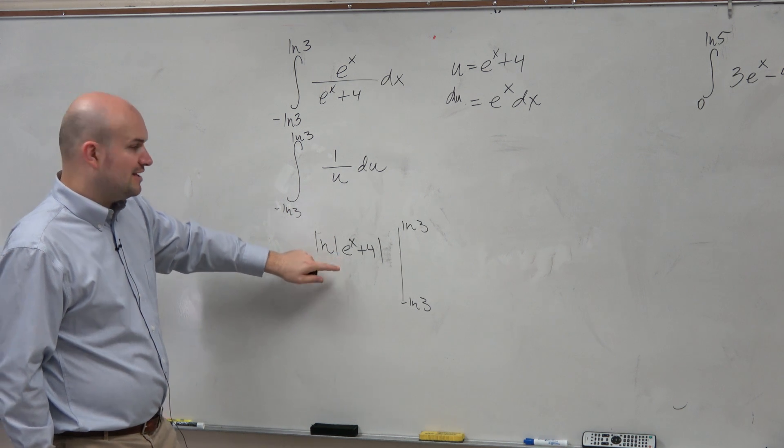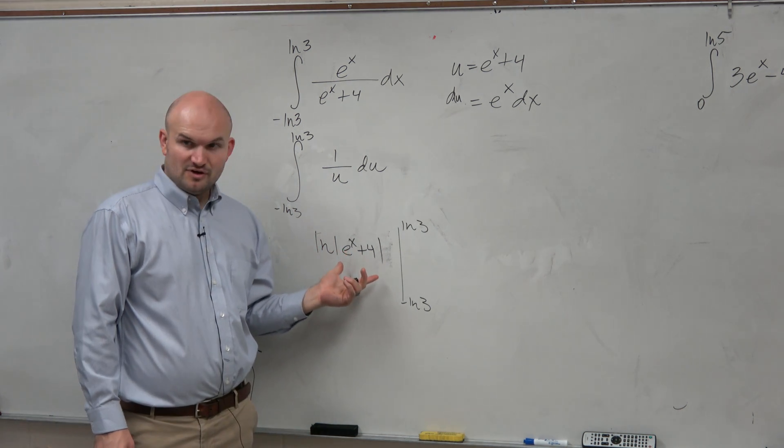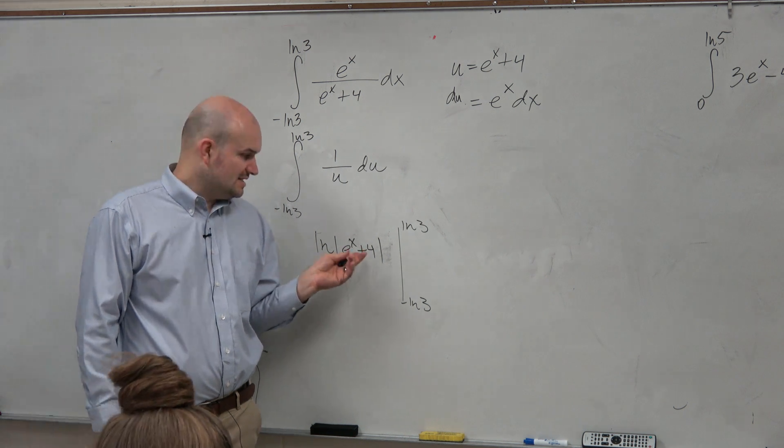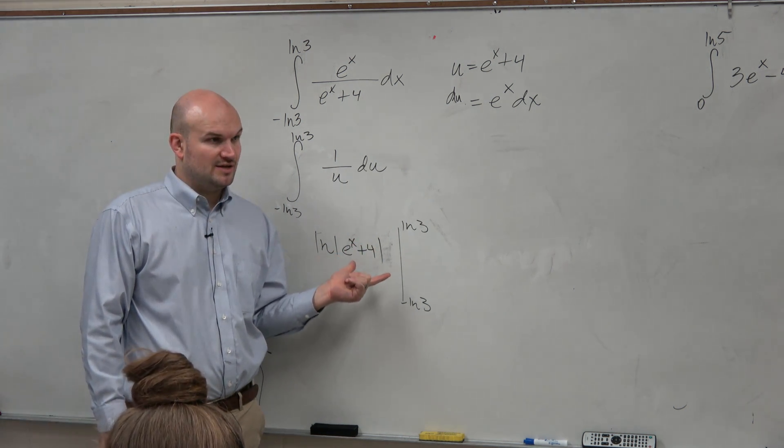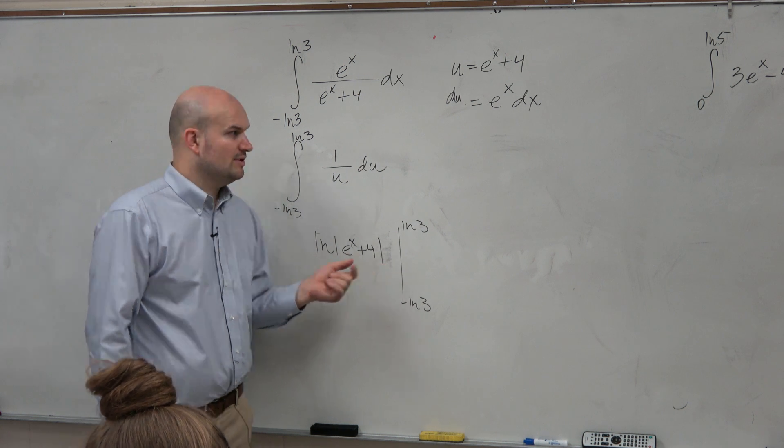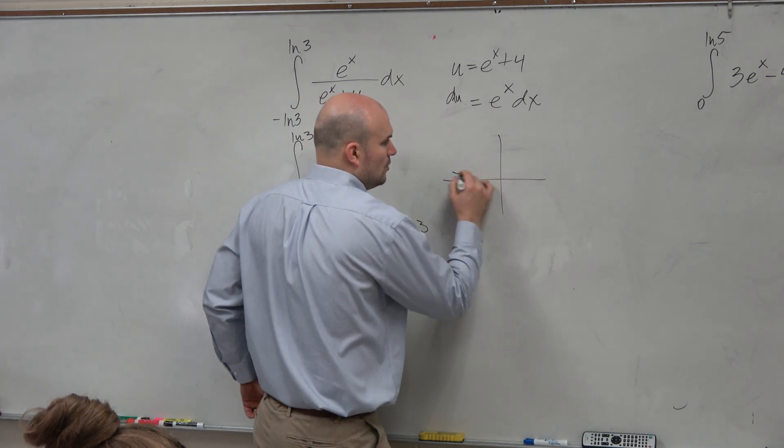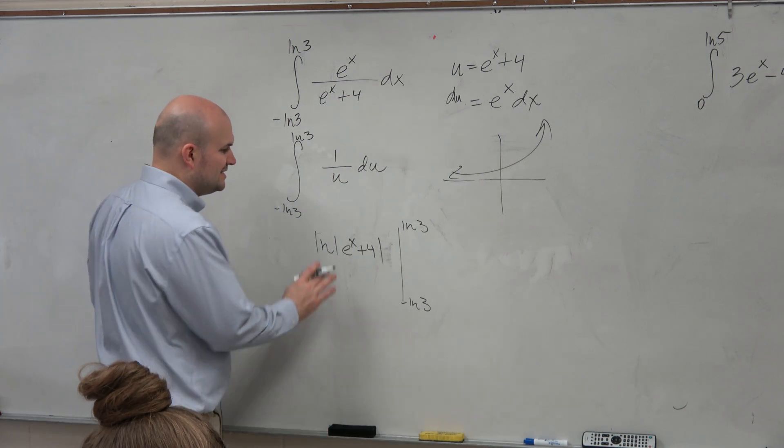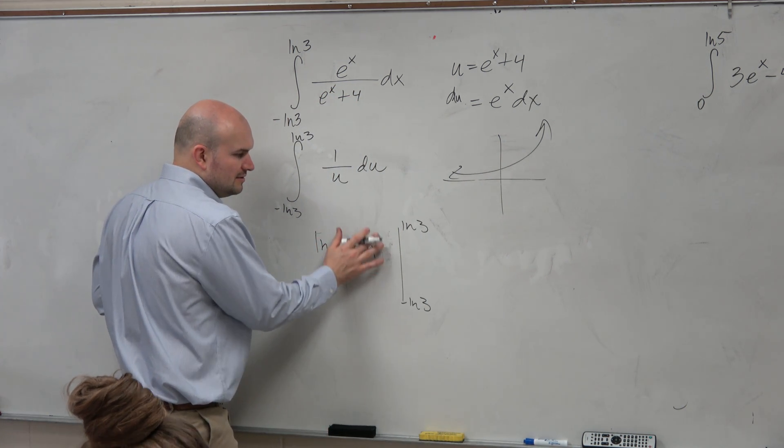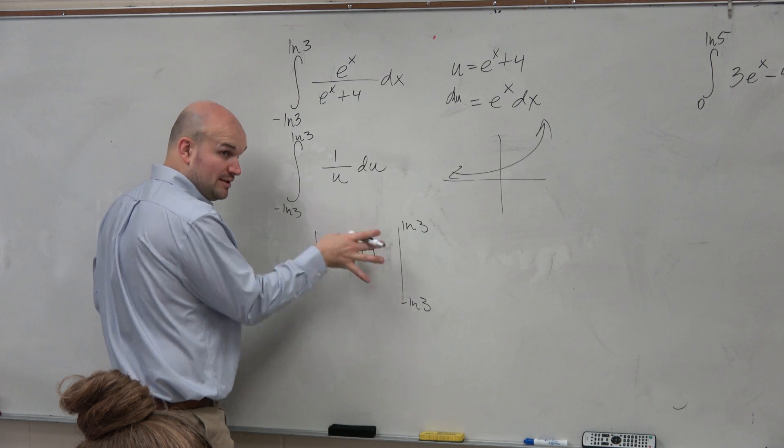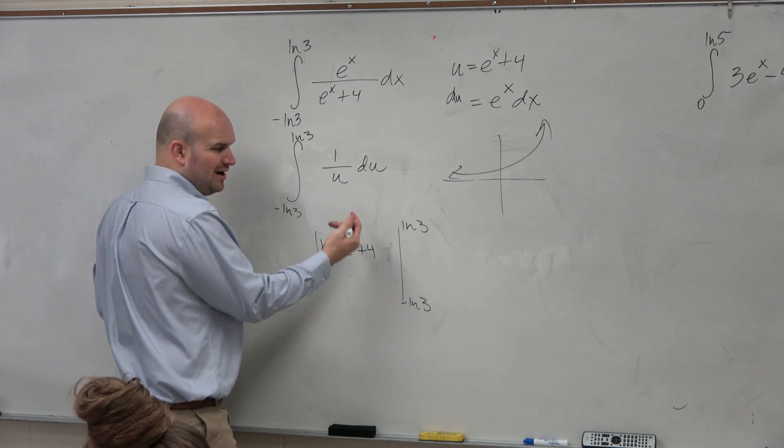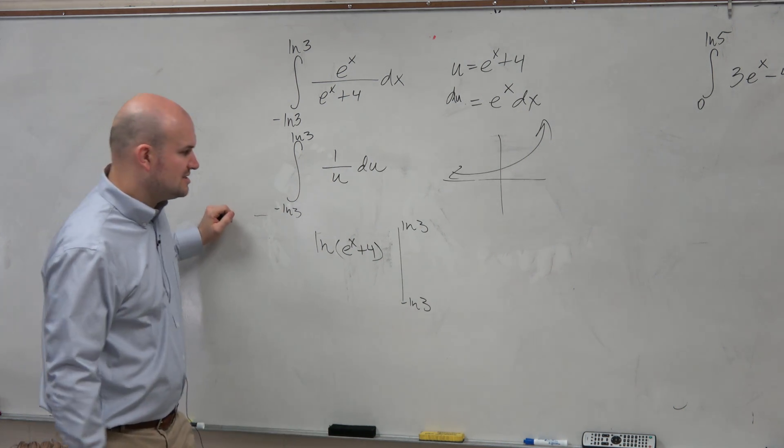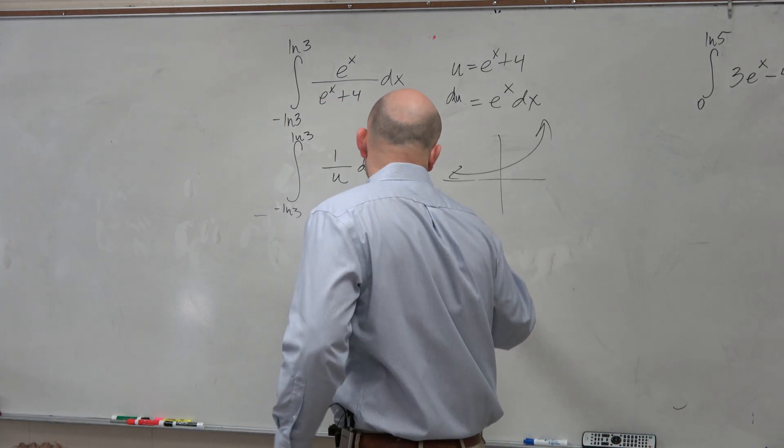Now, we could use the absolute value. However, is this function always going to be positive? Is e to the x plus 4 always going to give you a positive value? Think of what e to the x looks like. Is it always positive? Yeah. So we really don't need to include the absolute value. We need to make sure we understand that it's there. But since this is always a positive function, it's just extra stuff to write. So let's go and evaluate this.